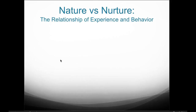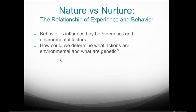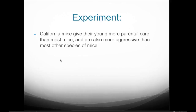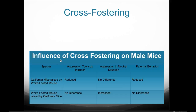This brings up the concept of nature versus nurture — the relationship of experience and behavior. We know behavior is influenced by both genetics and environmental factors. How can we determine what actions are environmental and what are genetic? For example: California mice give their young more parental care than most mice and are also more aggressive than most other mouse species. How can we test whether that aggressiveness is environmentally related or genetically related?